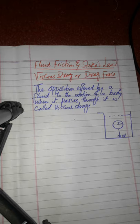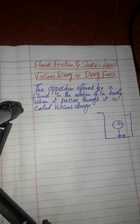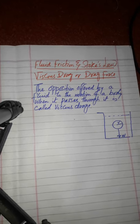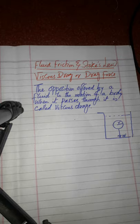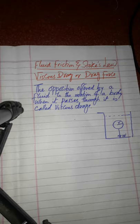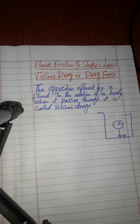Dear students, we were discussing chapter number six, fluid dynamics. We discussed viscosity and the coefficient of viscosity. When fluid flows through different layers, the layers oppose each other because of relative velocities — this opposition is called viscosity. Viscosity is basically a type of internal friction, which depends upon intermolecular forces of attraction and temperature.